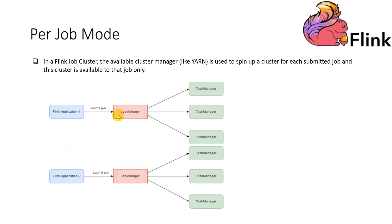Here, the cluster first applies for resources from the cluster resource manager to start the job manager and submit the job to the dispatcher running inside this process — that means inside the job manager. The task managers are then lazily allocated based on the resource requirements of this job. Once the job is finished, the Flink job cluster will be torn down.